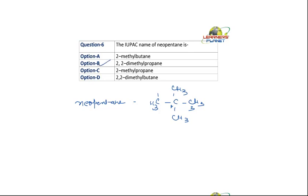So what is the name of Neopentane? It is 2,2-dimethylpropane. Now if I want to write isopentane.